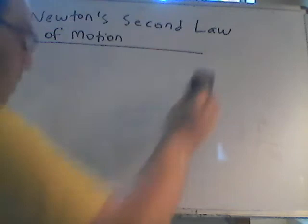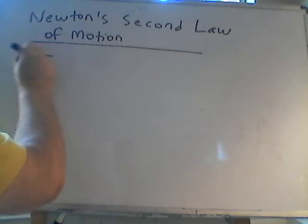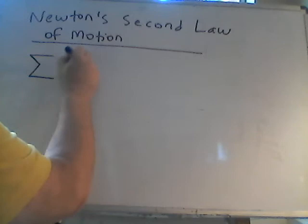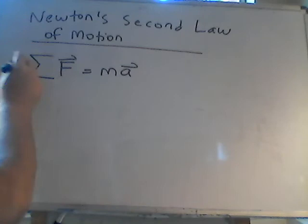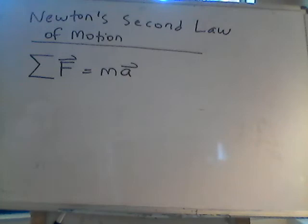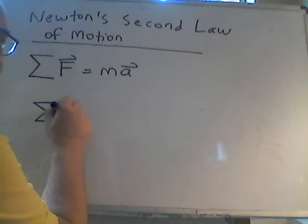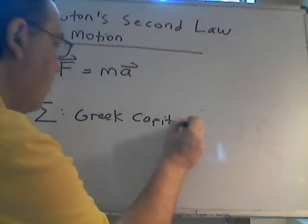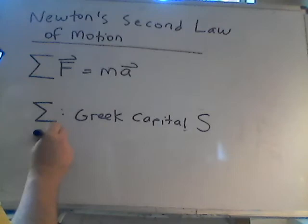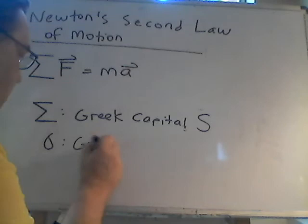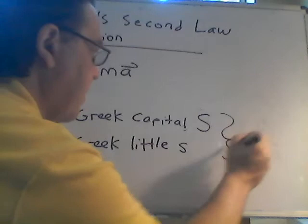Newton's second law: the summation of all forces is equal to the mass times the acceleration. The summation of all forces equals mass times acceleration. This symbol — capital sigma — is a Greek capital S, called sigma. Physicists need the Greek alphabet. We typically use the capital Greek sigma to represent summations.